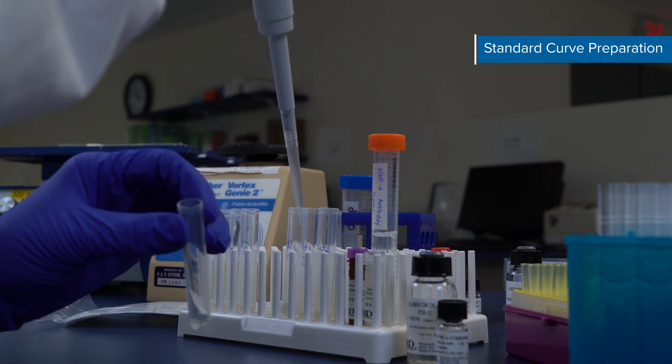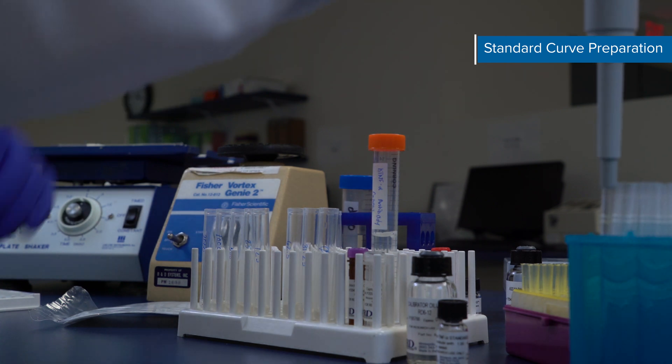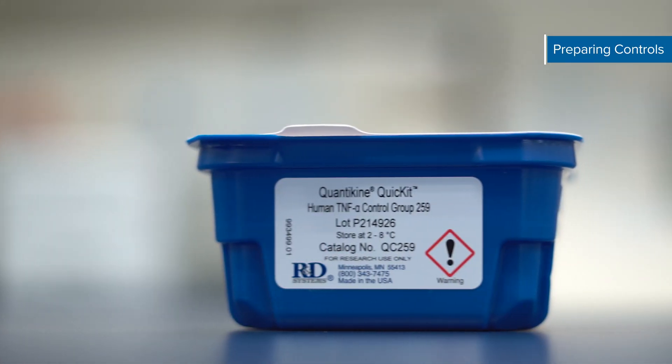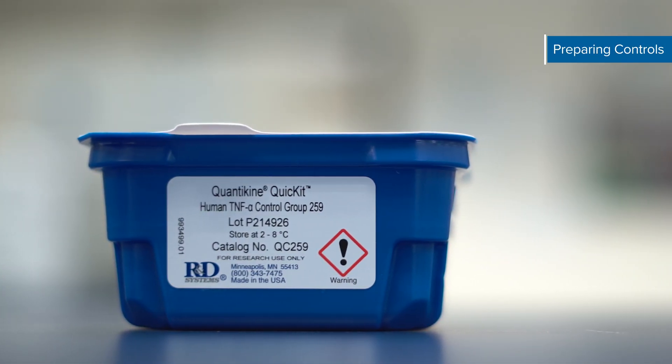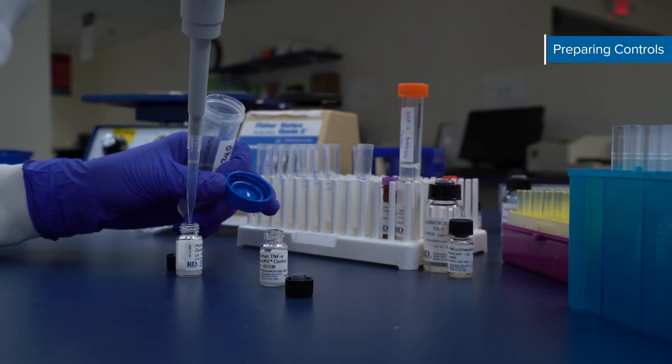The calibrator diluent serves as the blank. Blank wells contain zero standard and are treated identically to assay wells. They serve as the non-specific binding control for all assay reagents. In this assay, we're using the kit-specific R&D Systems QC Controls catalog number QC259. Check your kit booklet for the analyte-specific controls.